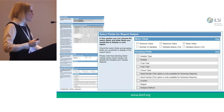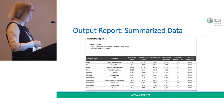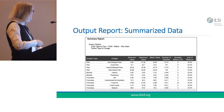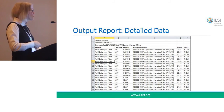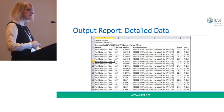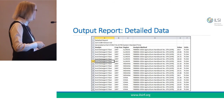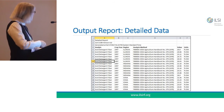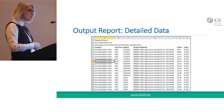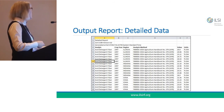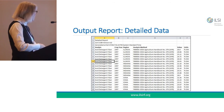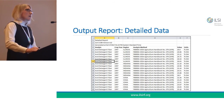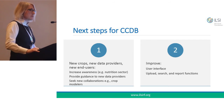This is an image from a summarized data report, and you can drill down to get more detailed information. This includes the year of the field trial, the state or location where it was conducted (though not down to the plot level), the analysis method used, the analytical value, and the units on the right-hand side. So what are the next steps for the CCDB?